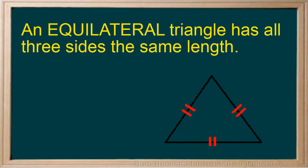There are three types of triangles based on their sides. The equilateral triangle has all three sides the same length. The red slashes indicate that the sides are equal in length.